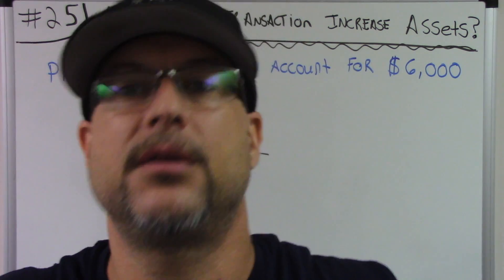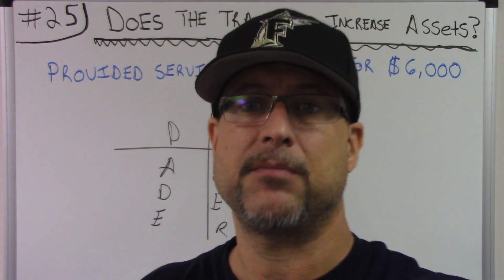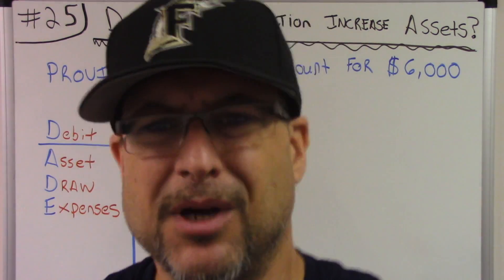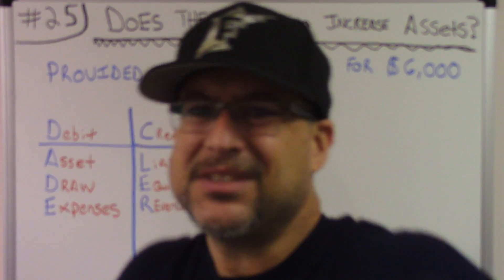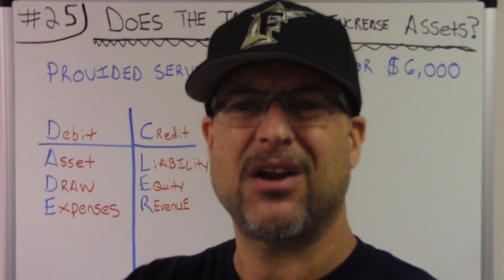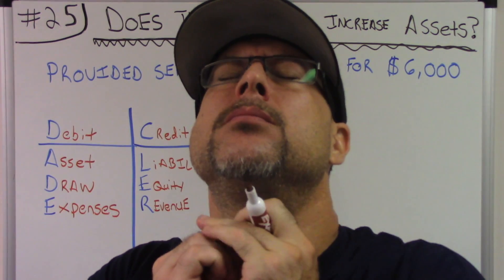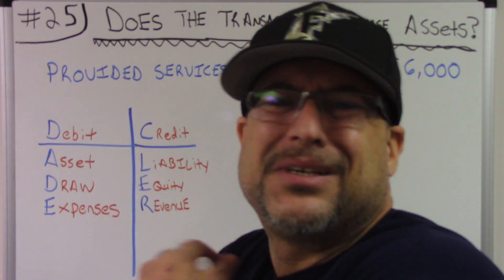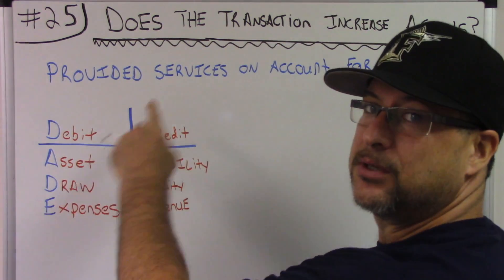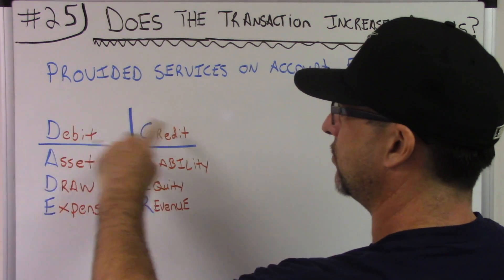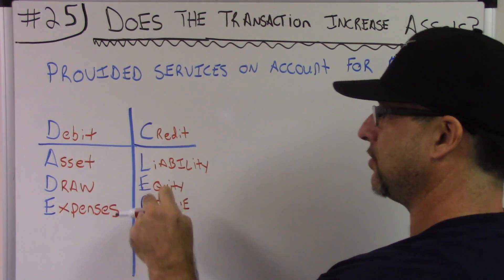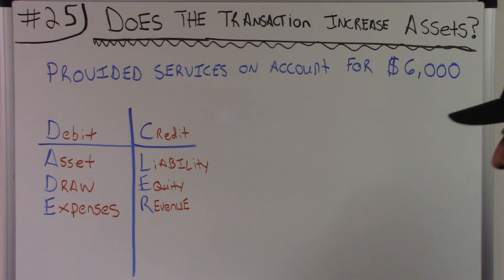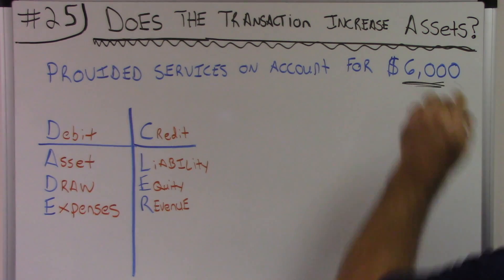Good, now that took a couple seconds. I've been writing this on my paper every single morning for a month now, I know this. I got this. So, debit credit — asset, draw, expense on the debit side; liability, equity, revenue on the credit side. That's our debit credit. Let's read into the question now. Provided services on account for $6,000. There's our amount of $6,000, so we're working with $6,000.